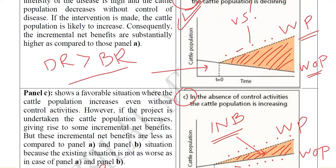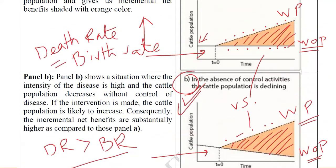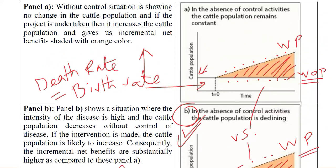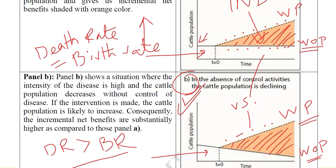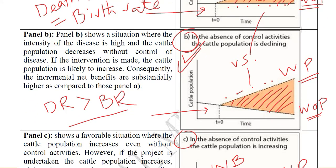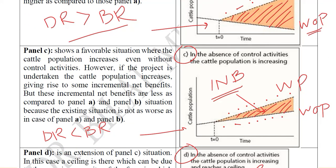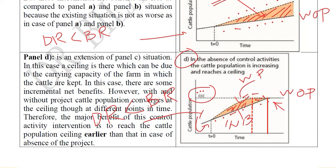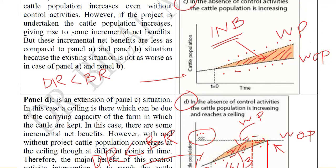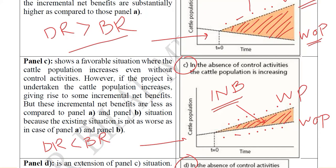The relative importance is visible across all panels: Panel A had substantial incremental net benefits, Panel B had even greater ones, Panel C had a little lesser, and Panel D had even lesser. But in all four cases, the incremental net benefits were positive, indicating the project is worth undertaking in each scenario.